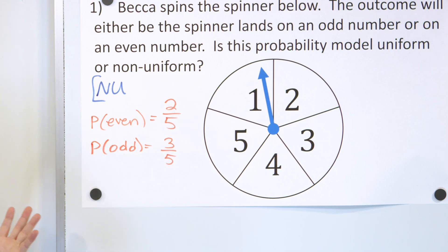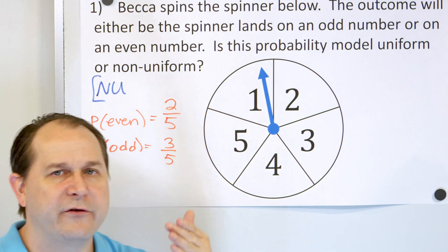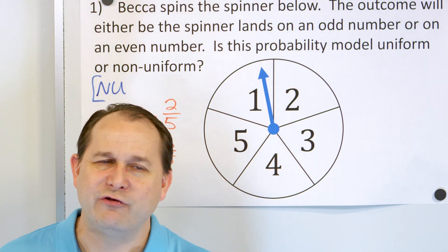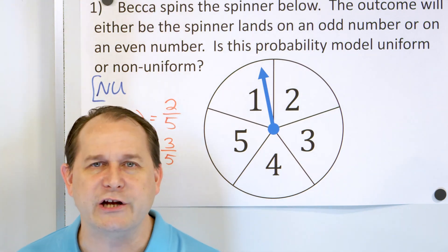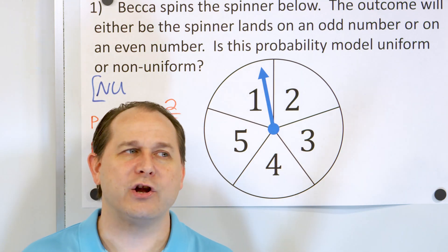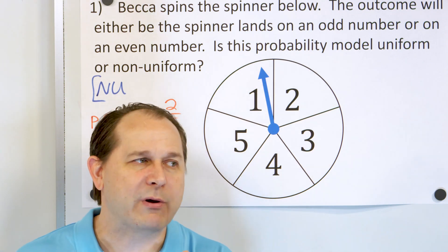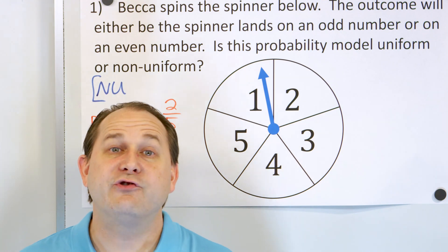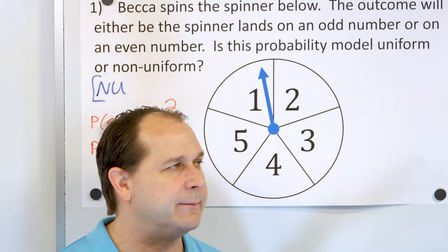...what do you get? The denominators are the same. Two plus three is five, so you get five over five, or a probability of one. You know intuitively that the probability of an even number plus the probability of an odd number has to add up to one, because on the spinner you have to land on an even or an odd number. The probabilities of all of the outcomes, once you calculate them, have to add to one because you're always going to get one of those outcomes.